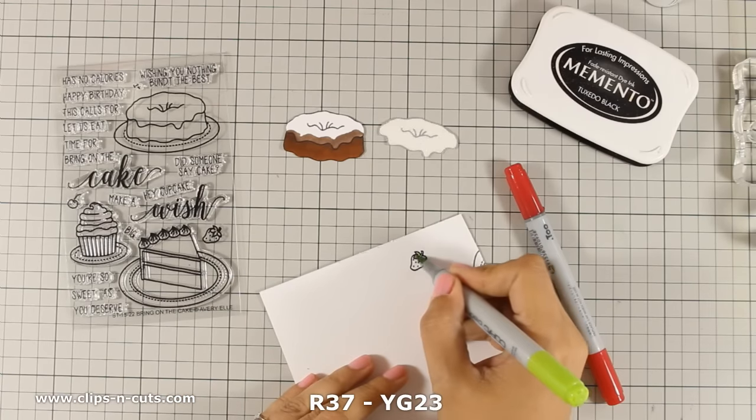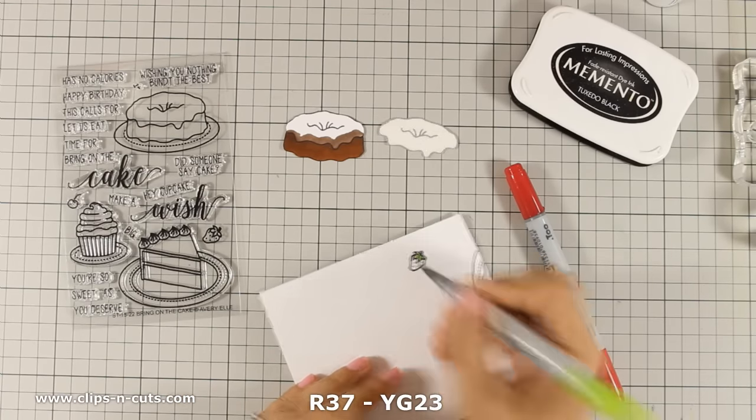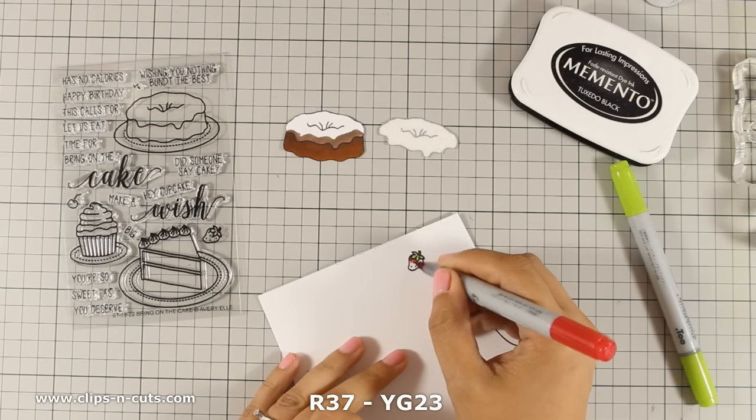To color the strawberry I am not going to do any shading at all. After all I plan to add glossy accent all over it so it won't really show and it is such a tiny little image.